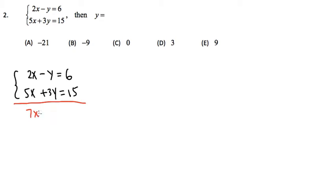If we combine these two equations together, that will give you a 7x. And if we combine negative y with positive 3y, that will give us positive 2y, and then let me bring down the equal sign, and then 6 plus 15, that's 21.